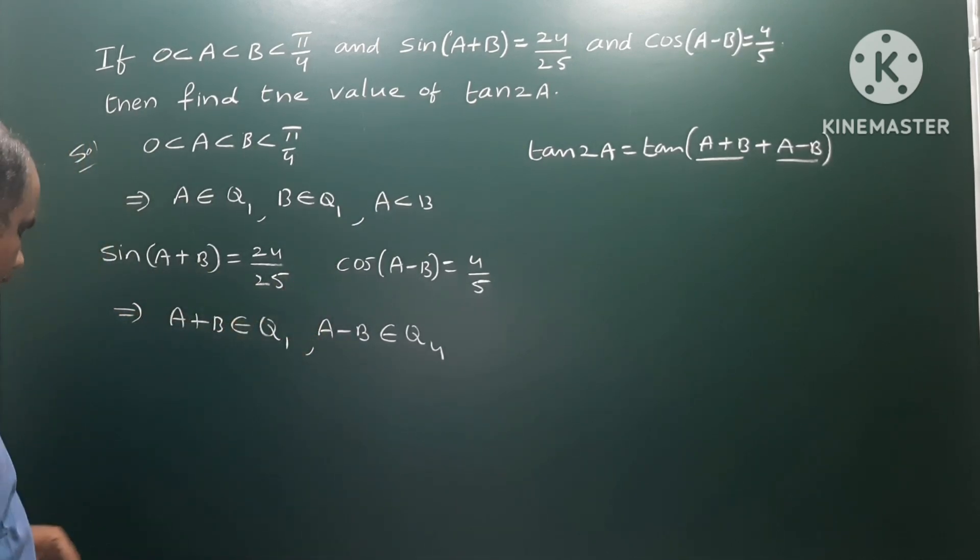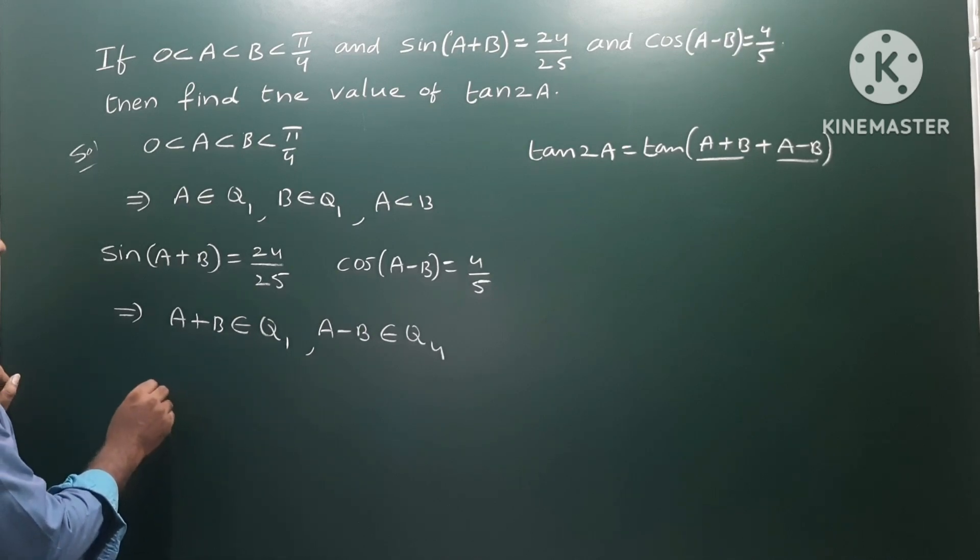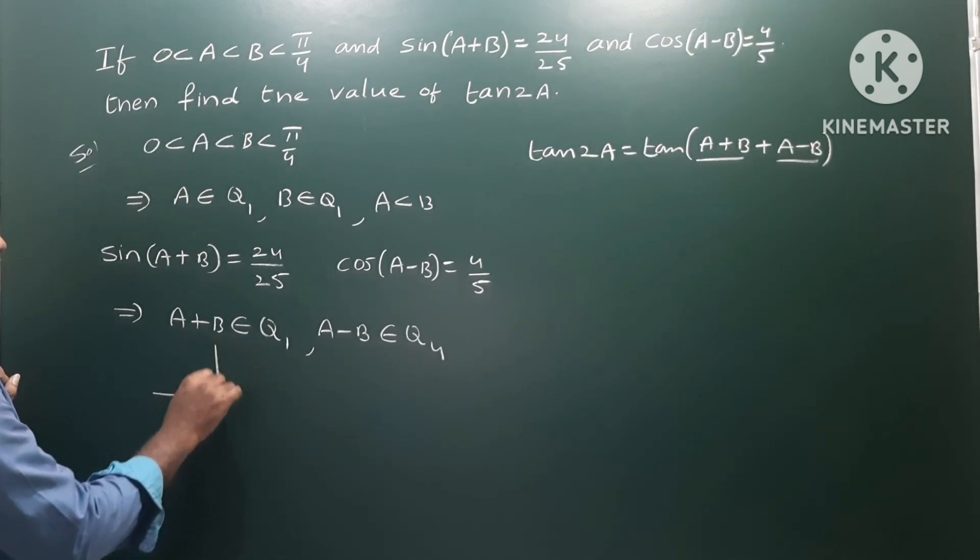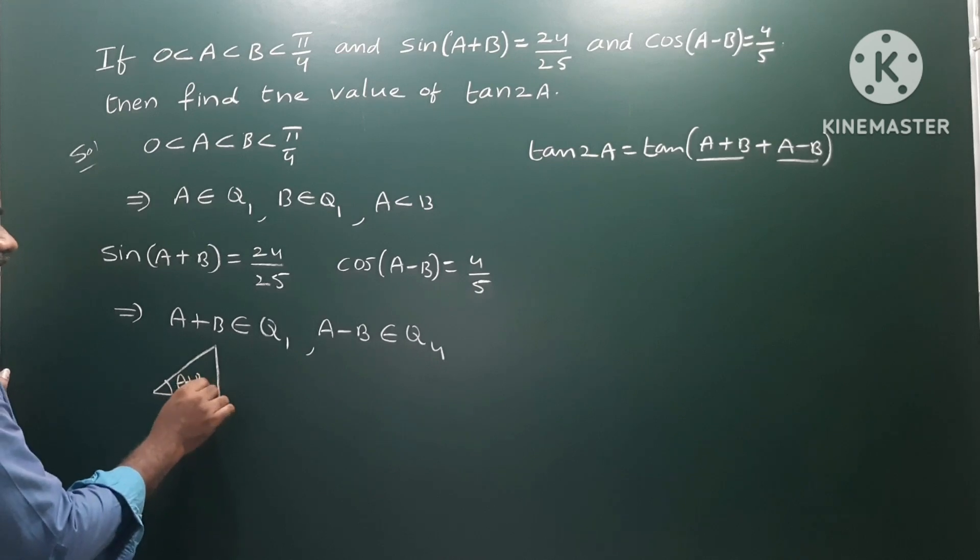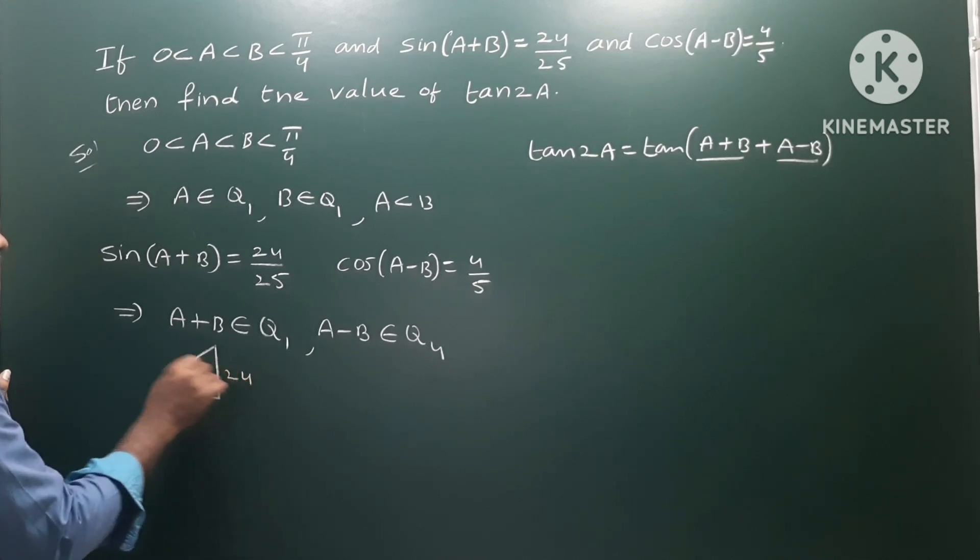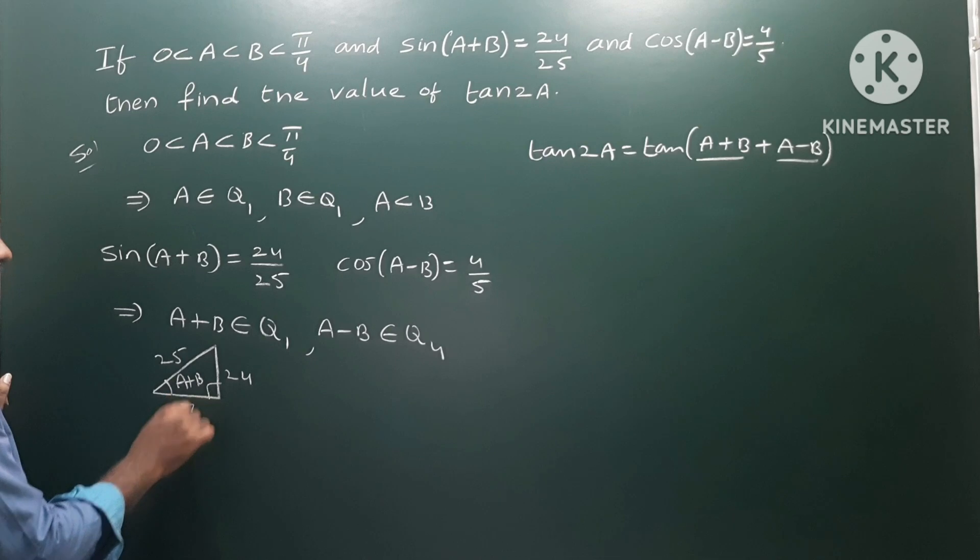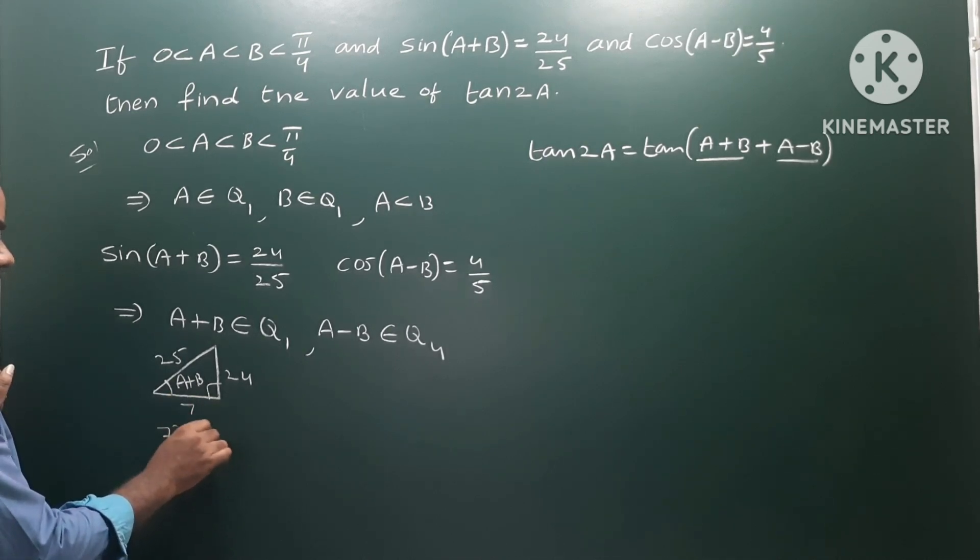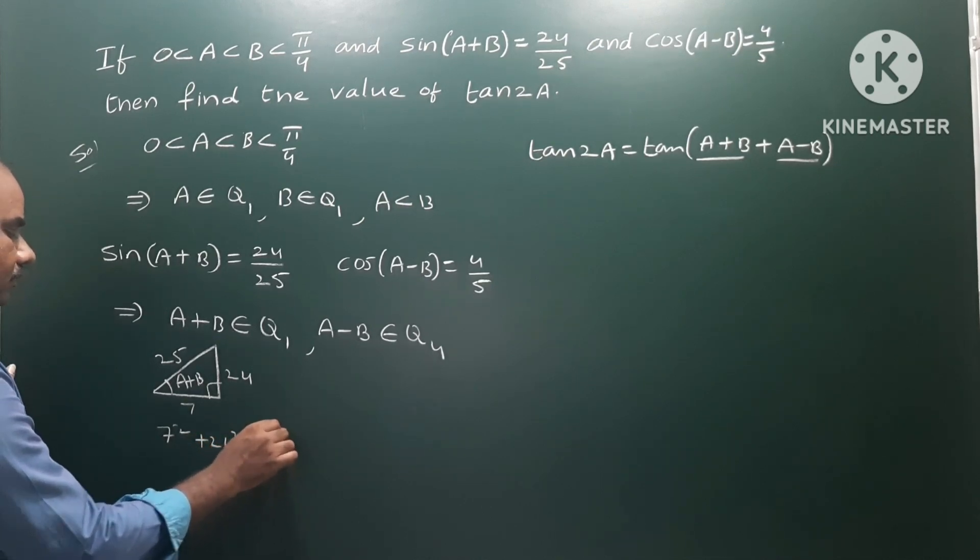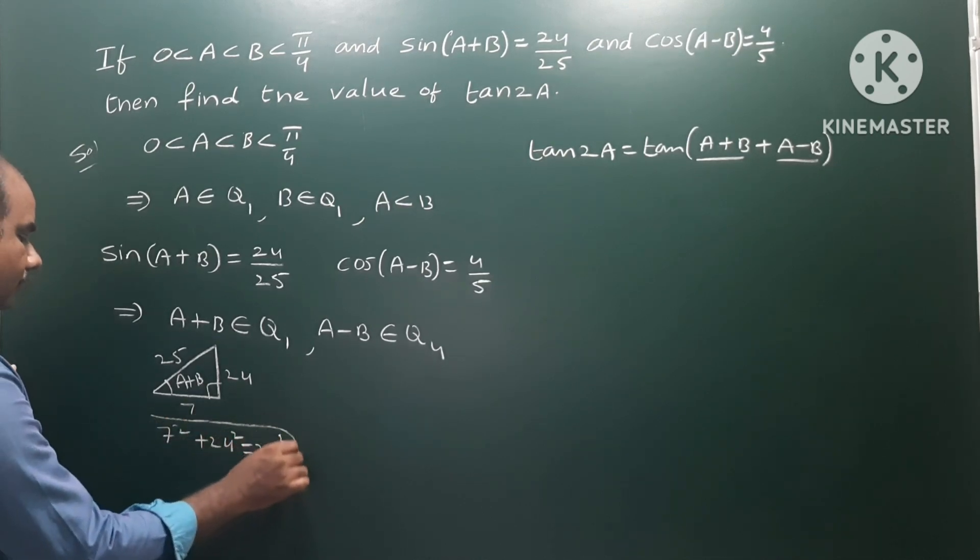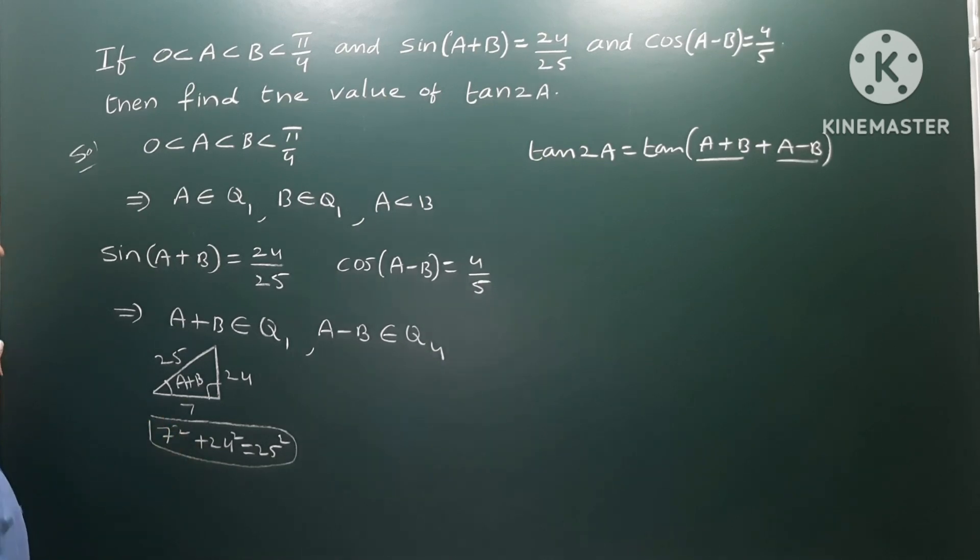We need to construct right angle triangles. For A+B, this is the angle. Sin is opposite side by hypotenuse, so the opposite side is 24 and hypotenuse is 25. Using the Pythagorean theorem, the adjacent side is 7.